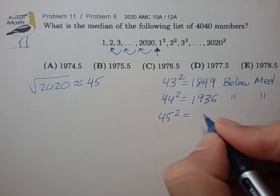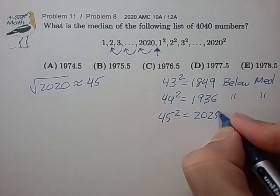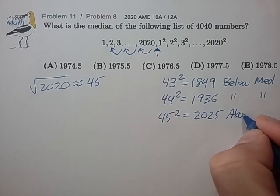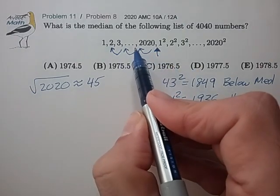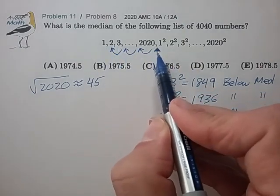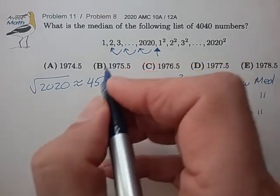And 45 squared is 2025, and that's going to be above the median. So we know that our median is going to be 44 slots to the left of dead center. And if you trace that through...